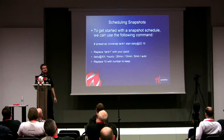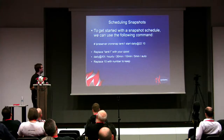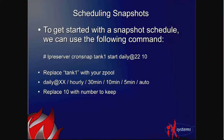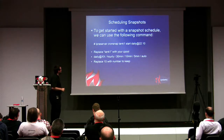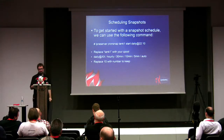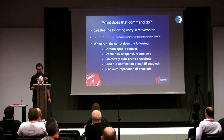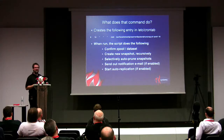To get started with snapshot scheduling, from the command line you'd run 'lpreserver cronsnap [pool] start daily@22 10' — meaning daily at 22:00, keep 10 days worth of snapshots, auto-pruning the rest. You can replace 'daily' with hourly, 30 minutes, 10 minutes, 5 minutes, or 'auto.' That command just creates a cron entry — nothing super fancy, but a nice front end. When the script runs, it confirms the pool and dataset are accessible, creates a new snapshot recursively, selectively auto-prunes old snapshots if you've reached the threshold, and can send notification emails and start auto-replication if enabled.